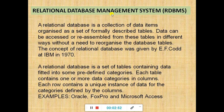What is a relational database management system? It is a collection of data items organized as a set of formally described tables. Data can be accessed or reassembled from these tables in different ways without the need to reorganize the database table. This concept was given by E.F. Codd at IBM in 1970.